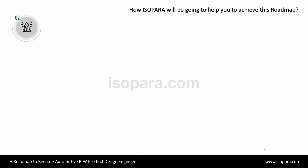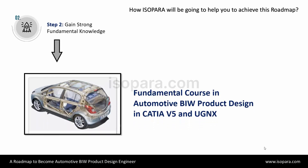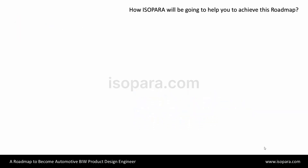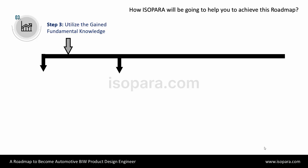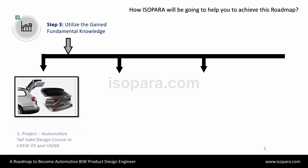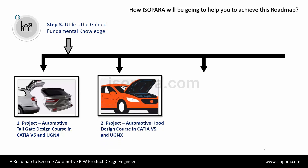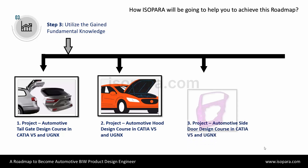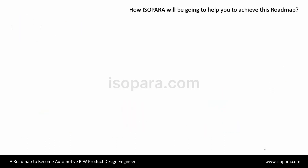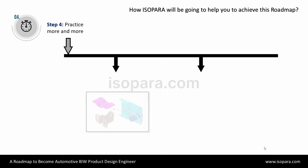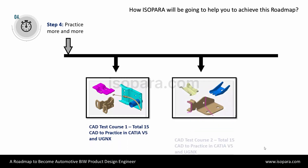For Step 2, the course is the Fundamental Course in Automotive BIW Product Design in CATIA and Unigraphics. For Step 3, the courses are: Project of Automotive Tailgate Design, Project of Automotive Hood Design, Project of Automotive Side Door Design in CATIA and Unigraphics, and many more. Step 4 is CAT Test Courses — each CAT Test Course contains 15 CAT Tests to practice.